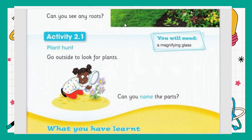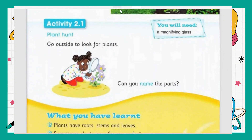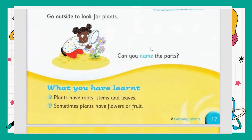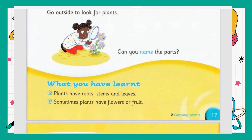The activity is: go outside to look for a plant and name its parts. You go outside your home, look for plants, and identify the body parts of the plant — for example, flowers, stem, leaf, fruits, and root.